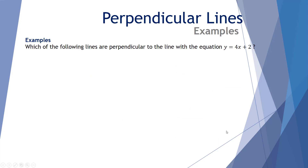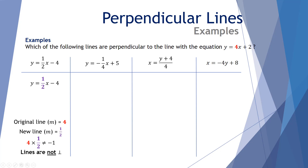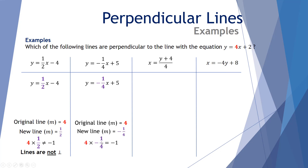Let's look at examples of perpendicular line comparisons. Which of the following are perpendicular to y equals 4x plus 2? First: y equals a half x take 4 has gradient a half. The original has gradient 4. Multiplying: a half times 4 equals 2, not negative 1 — not perpendicular. Second: y equals negative a quarter x plus 5 has gradient negative 1 quarter. The original has gradient 4. Multiplying 4 by negative 1 quarter gives negative 1 — these lines are perpendicular.